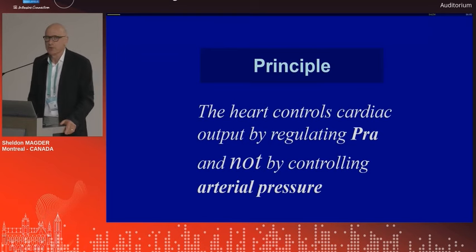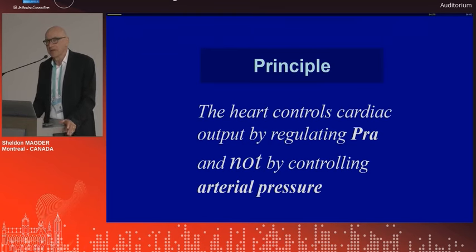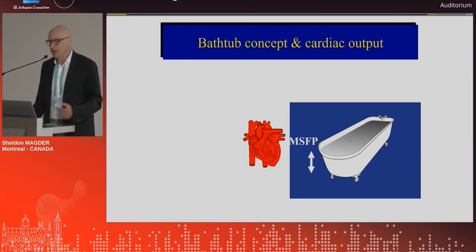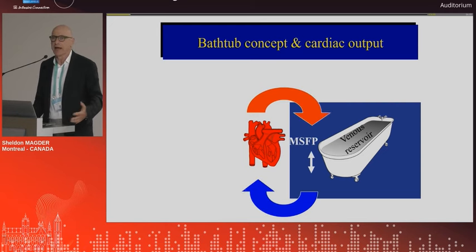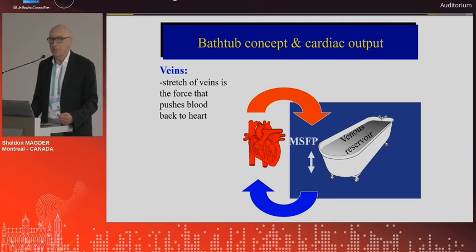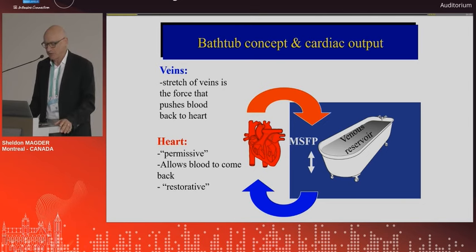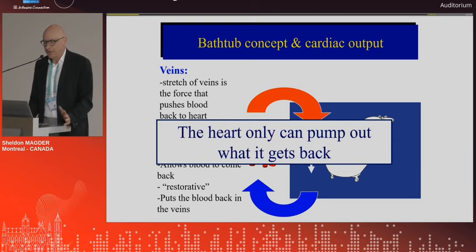The fundamental principle I begin with is that the heart controls cardiac output by regulating right atrial pressure, not by controlling arterial pressure. It controls what comes back. The simple conceptual model I like using is that our vasculature is like a large bathtub — a large reservoir of volume. The heart lowers right atrial pressure, allows that reservoir to drain, and then puts the blood back again. The stretch of the veins is the force that pushes blood back to the heart, and the heart has a permissive function. It allows blood to come back, and of course it must restore it because if you don't put it back in the bathtub you won't have any more flow. The fundamental concept is that the heart can only pump out what comes back to it.